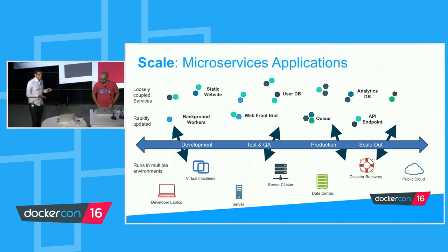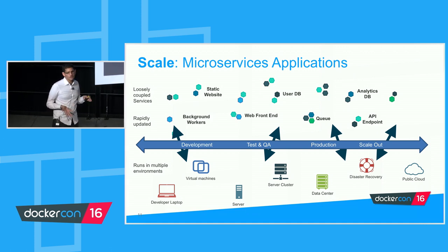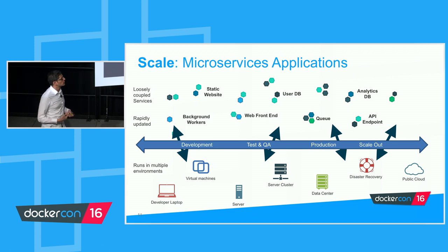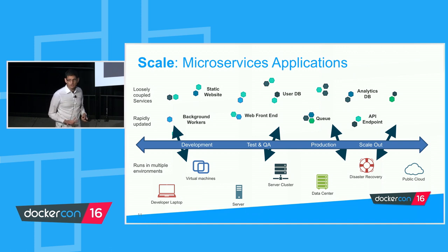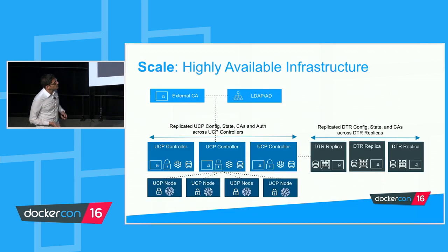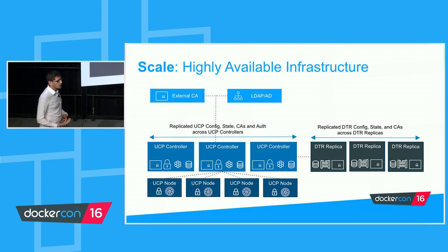Starting with scale. A microservice application is built off a series of loosely coupled services which can be swapped out independently and rapidly updated — static websites, databases, front-end, queues, API endpoints. When building a microservice, you need to make sure it works across anything from a developer laptop to VMs in a public cloud to production data centers. Using the Docker API makes it very easy to build microservices that run in many different environments. For infrastructure, high availability means that if something goes wrong in the data center, your cluster stays alive and all your applications are unaffected.